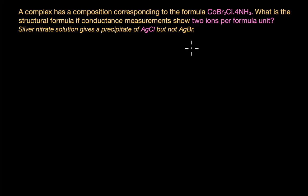So how do we solve this question? Let's begin with what is given to us. We have information on conductance measurements. Now conductance measurements are used in coordination chemistry to determine the number of ions a complex releases when it is dissolved in water or another solvent.